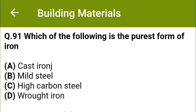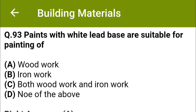Which of the following is the purest form of iron? Option A, cast iron; option B, mild steel; option C, high carbon steel; option D, wrought iron. The correct answer is option D, wrought iron.